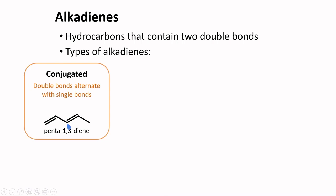Conjugated alkadienes involve a series of sp2 hybridized carbons, and these sp2 hybridized carbons interact with each other to give a stabilizing effect.